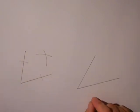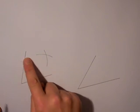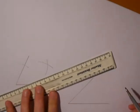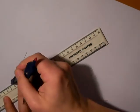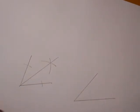What I've actually done is created an isosceles triangle here and created an isosceles triangle there, and draw through to bisect my angle.